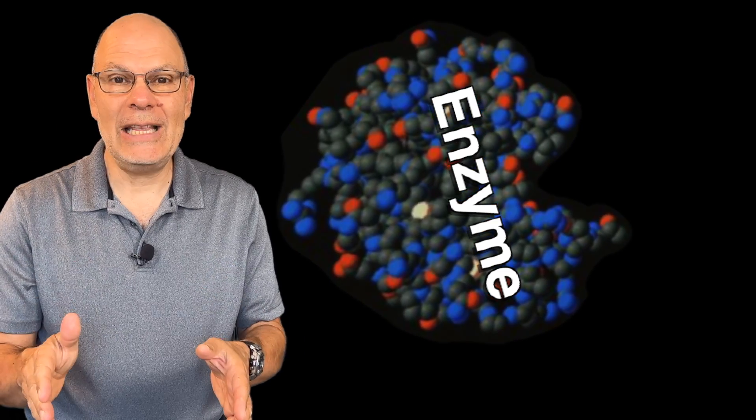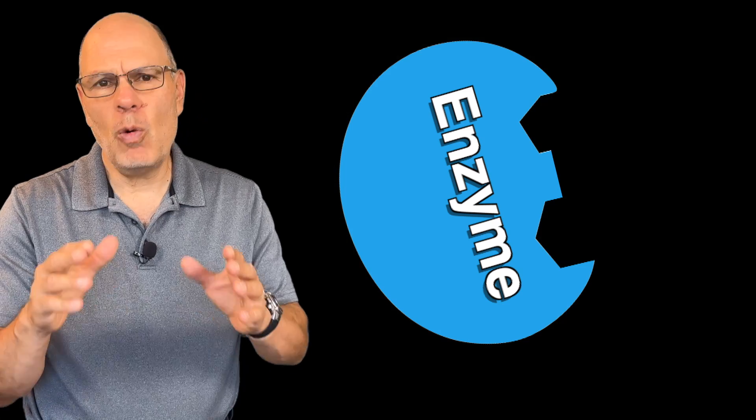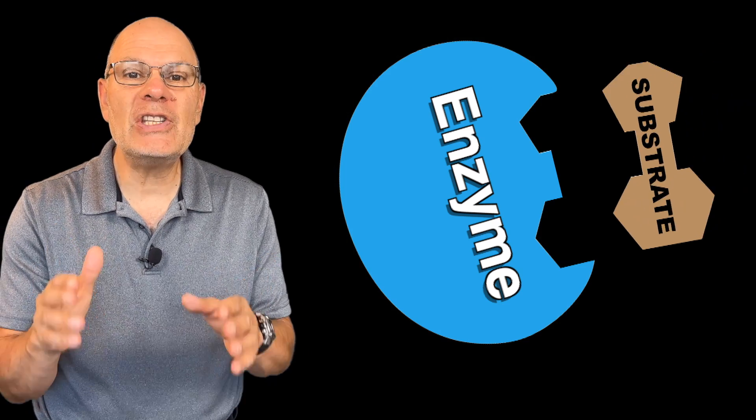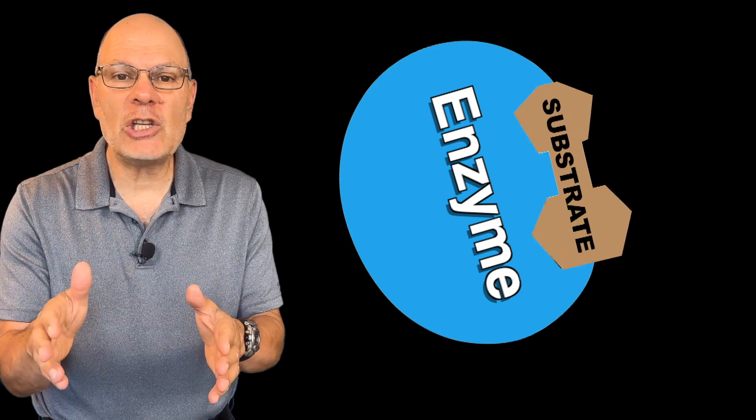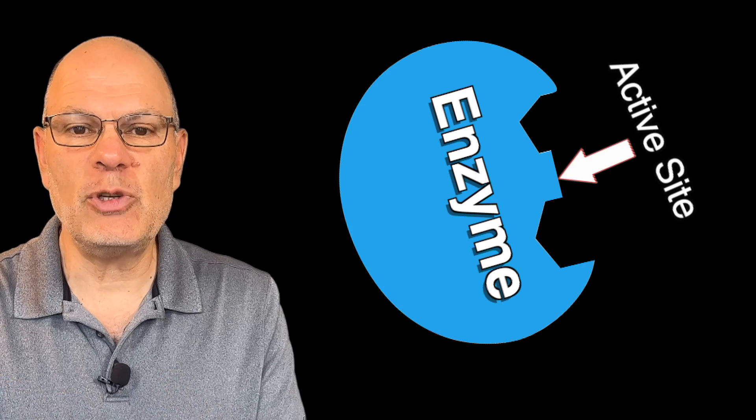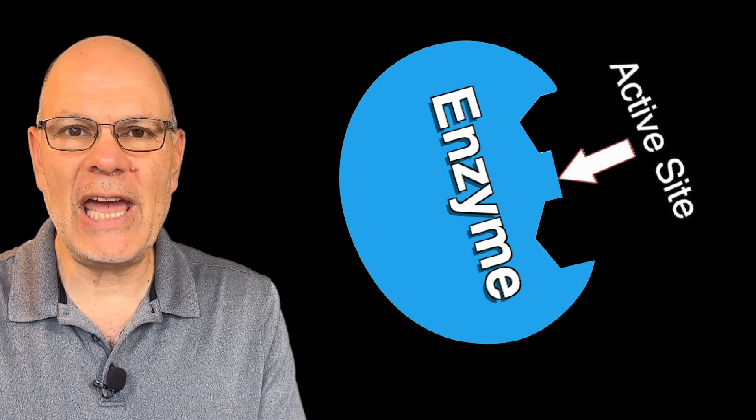Enzymes are protein catalysts. They interact with one substrate. The substrate is simply what an enzyme interacts with. Enzymes are big proteins, and only part of the protein actually touches the substrate. That's called the active site.